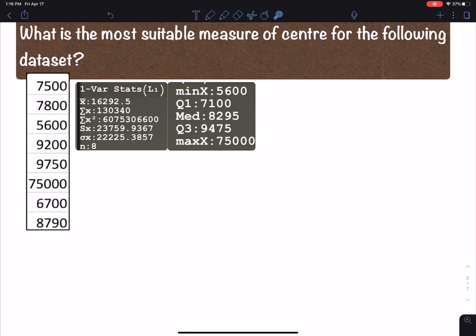Some things that we really want to look at are x-bar and the median. We're comparing these two. Now which one seems like a better measure of the center? Now look at this data. The values are from 7500, 7800, we got 5600, 9200, 9750, 6700, 8790.